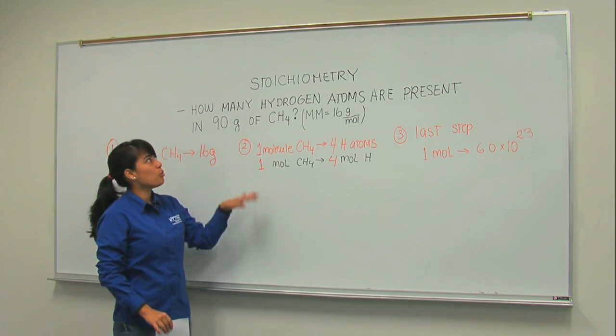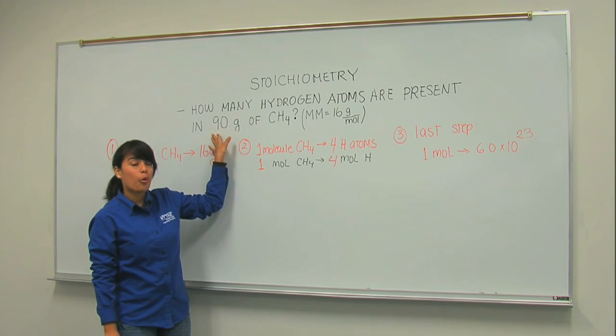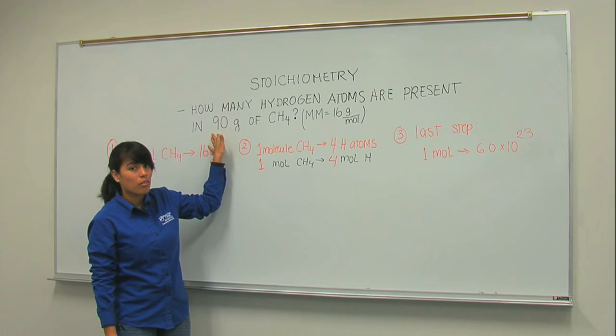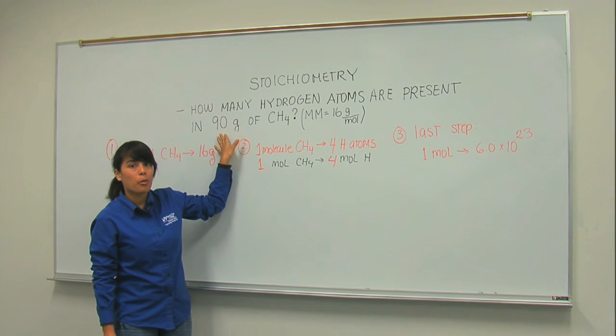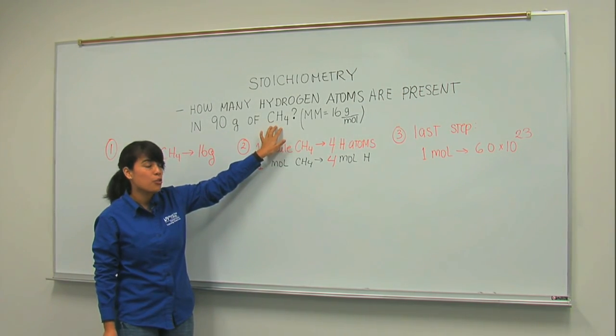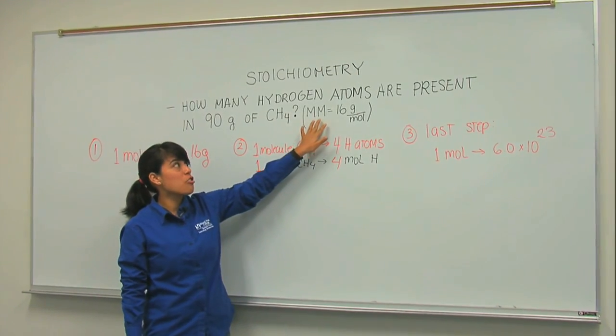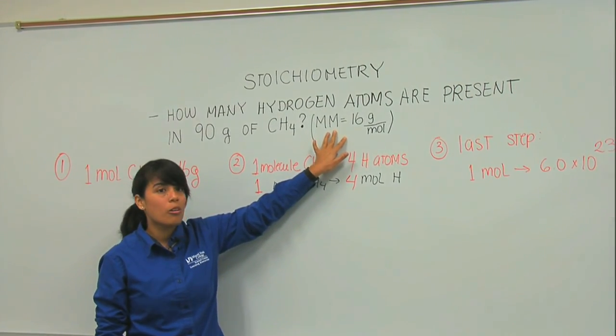We're going to learn how to calculate the number of atoms from any given mass in grams. So this is our problem. How many hydrogen atoms are present in 90 grams of methane? Methane is CH4. They give us a hint and tell us that the molar mass of methane is 16 grams per mole.